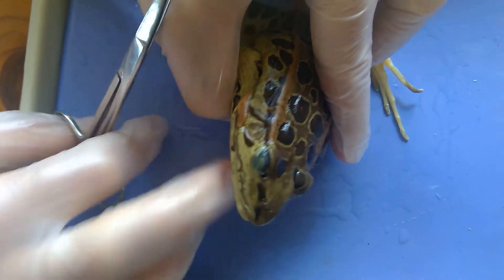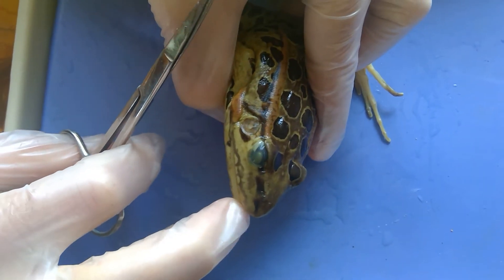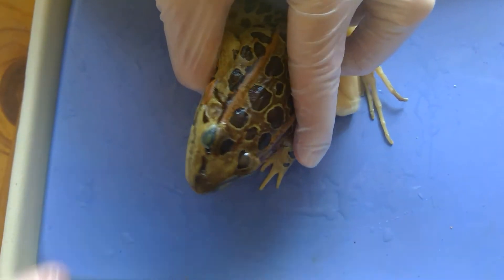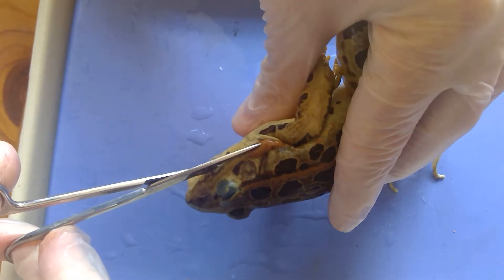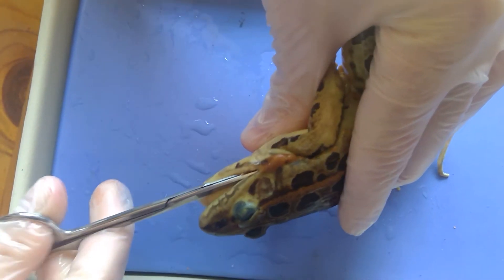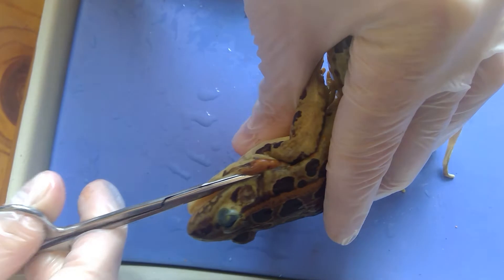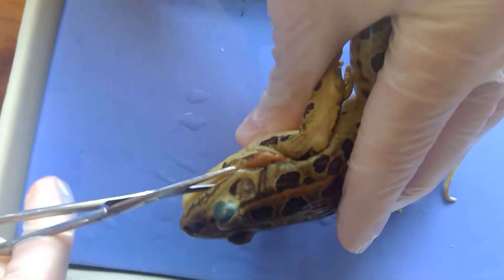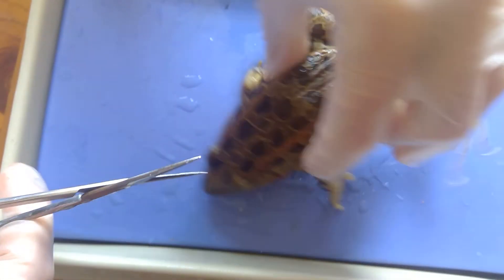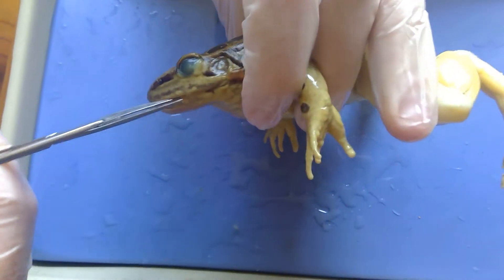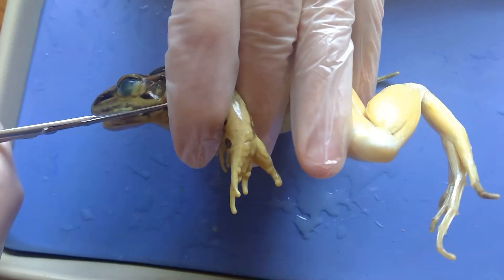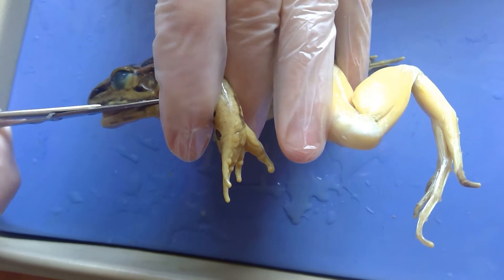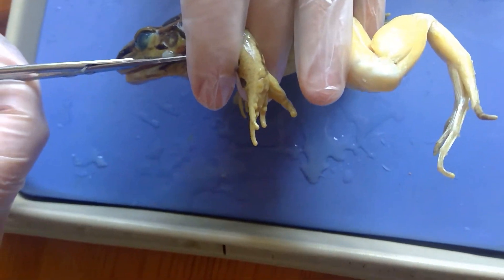And the frog's mouth is pretty tightly shut. So I'm going to cut through the muscle here in its jaw just so that I can more easily open up the mouth. So I'm cutting it to beyond the tympanum.